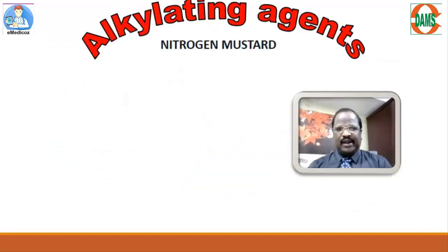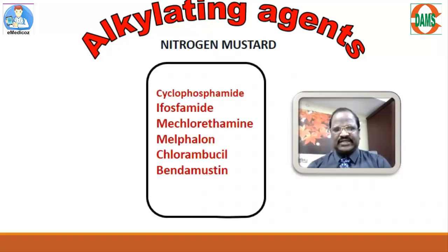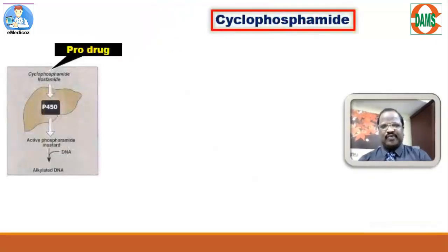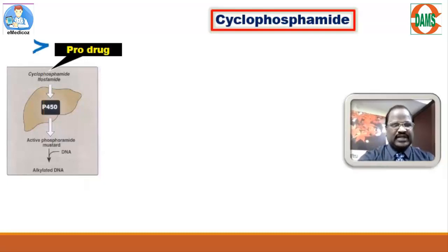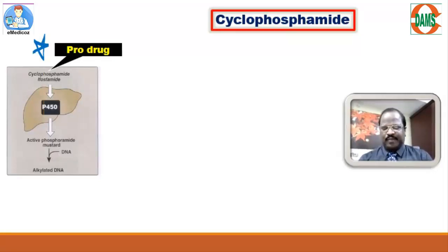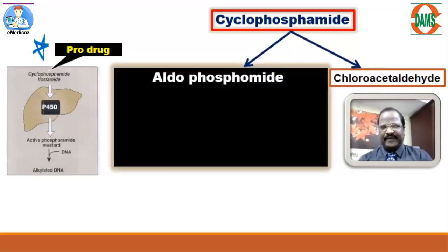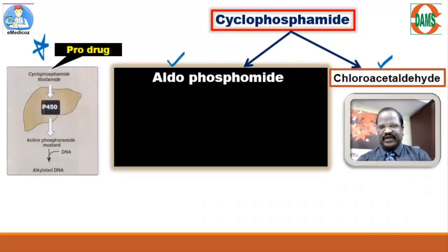Now we move to individual groups. The first group is nitrogen mustard. Cyclophosphamide is a very important anti-cancer drug. The first important MCQ point: it is a pro-drug. Cyclophosphamide first undergoes metabolism in the liver and produces metabolites called aldophosphamide and chloroacetaldehyde.